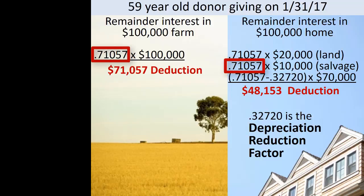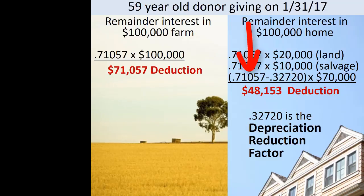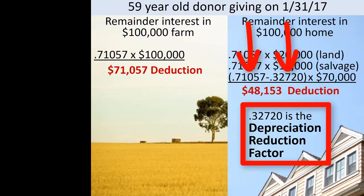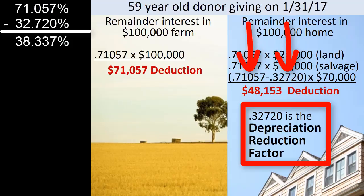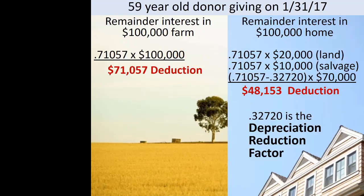Because this salvage value does not depreciate, it is also deducted at the same percentage as the land — in other words, 71.057%. The remaining value of the residence, however, is presumed to depreciate. Consequently, this portion may not be deducted at the full 71.057% used for farmland, but must be reduced by a depreciation reduction factor. Using the example described later, the depreciation reduction factor is 0.32720, or 32.72%. Thus, the depreciable part of the residence may be deducted at 38.337% — that is, 71.057% less 32.720%. Combining these parts results in the total deduction of $48,153 for the $100,000 home.